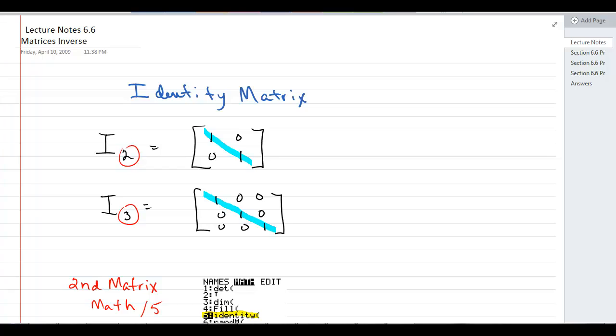This is section 6.6, and we're learning a few more things about matrices. We're going to learn about the identity matrix, which you've actually seen a little bit, and how to find the inverse of a matrix.